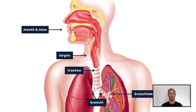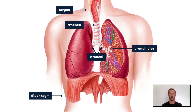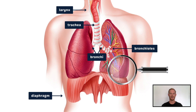When we breathe in, air passes through the mouth or nasal passages, through the larynx or voice box, and into the trachea. The trachea divides into the left and right bronchi, and then the smaller bronchioles, which distribute air throughout the lungs. Finally, the air reaches the alveoli, the site of gaseous exchange.